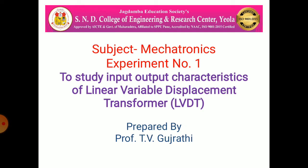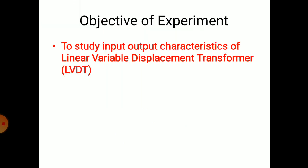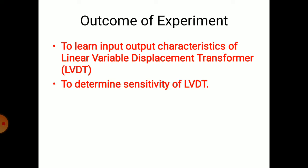This is the first experiment of Megatronics Subject. The objective of the experiment is to study Input-Output Characteristics of Linear Variable Displacement Transformer — that is, the relationship between input and output of the LVDT. LVDT is a Linear Measurement Instrument; we can measure linear displacement with it. After studying this experiment, you will learn the Input-Output Characteristics of LVDT and be able to determine the sensitivity of LVDT.